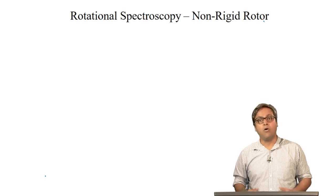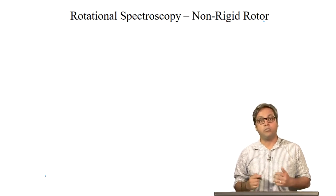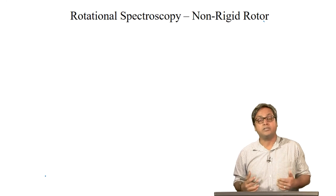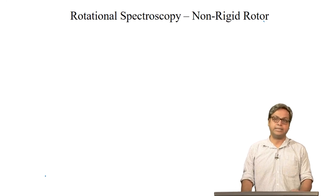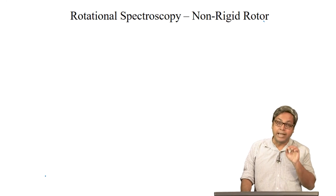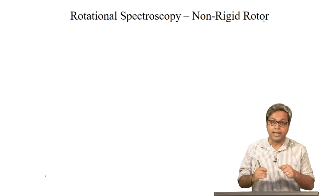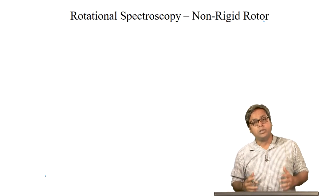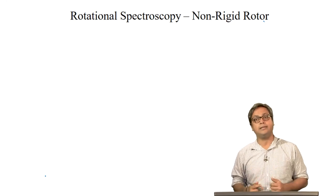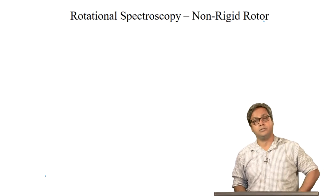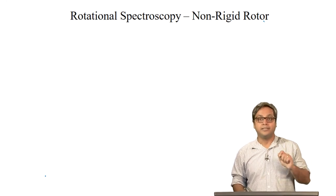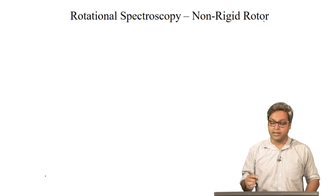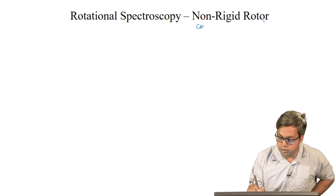But what is going to happen to a molecule as it rotates faster and faster? Intuitively we can say that the bond length will get longer and longer. But why would the bond length get longer as the molecule rotates faster? This is due to centrifugal distortion.